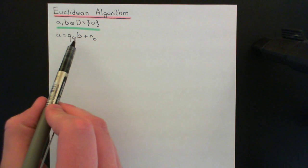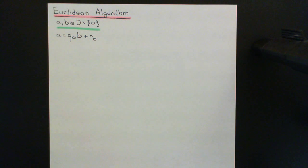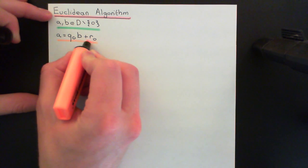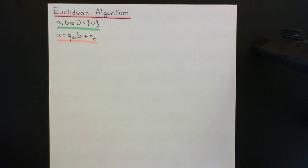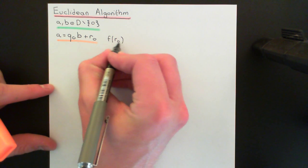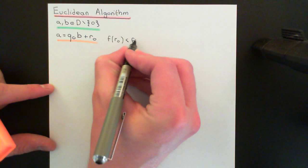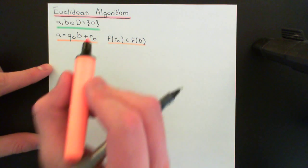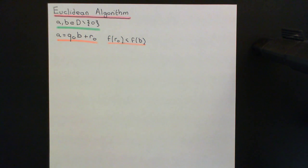Either A is a perfect multiple of B, in which case R0 equals zero and you stop the Euclidean algorithm right there. However, if A is not a perfect multiple of B you get a non-zero remainder. In that case, the Euclidean size function tells us that φ(R0) is strictly less than φ(B). If R0 is zero, you stop with A = Q0·B; otherwise, continue.